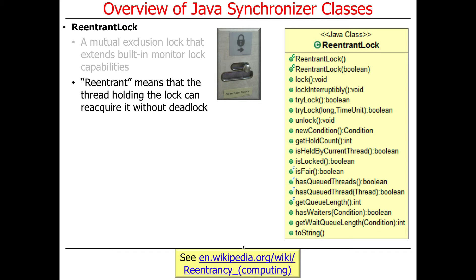Reentrant means that the thread that holds the lock can reacquire it without deadlocking on itself. You'll see that with assignment 1b — if you're implementing the grad student version, you have to implement a reentrant spin lock. Reentrant is important. It's a way of optimizing for the case where you have to have recursiveness in your lock hierarchy, and there are certain situations where that's important.